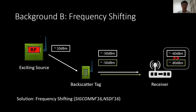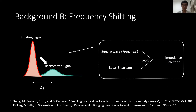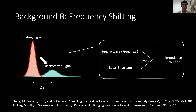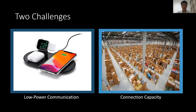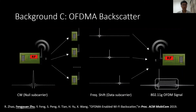However, early backscatter systems cannot achieve long-range operation or high data rate, mainly because of severe interference from the exciting signal source. So researchers proposed frequency shifting to address this issue. The basic idea of frequency shifting is to use a square wave to mix with the local bitstream and put the output to the impedance selection circuit. This operation moves the band of the backscatter signal away from the band of the exciting signal, thus reducing the interference. Our previous work, OFDMA backscatter, had partially addressed the connection capacity issue.